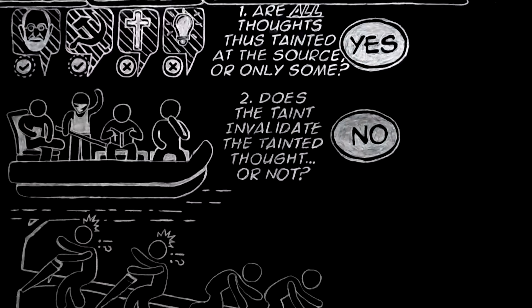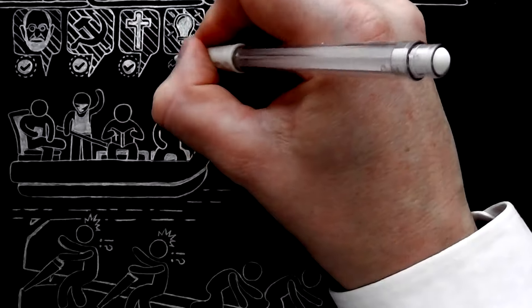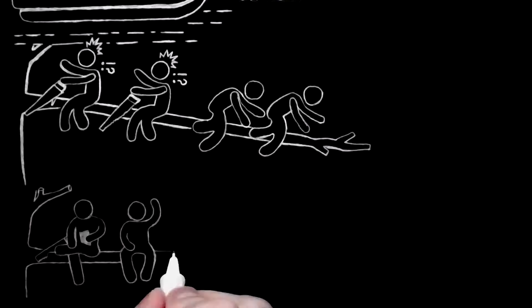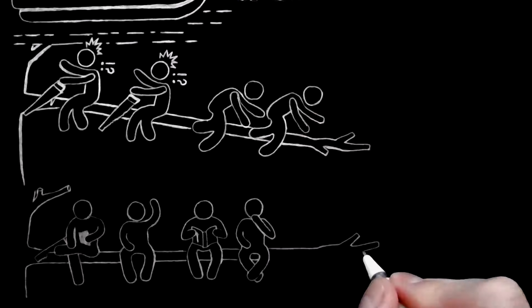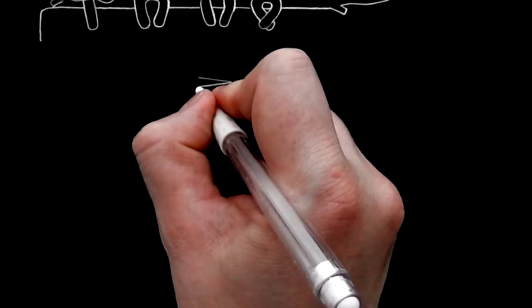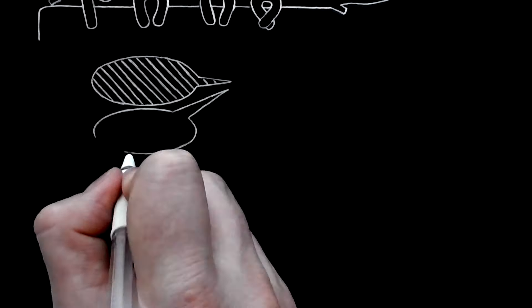In which case they have saved their own branch but also saved ours along with it. The only line they can really take is to say that some thoughts are tainted and others are not, which has the advantage, if Freudians and Marxians regard it as an advantage, of being what every sane man has always believed.